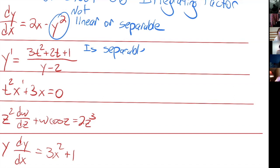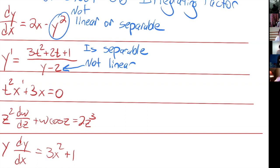For the second one, this one is separable because it's basically already a product, but it is not linear since when we divide by the dependent variable that's not a linear thing. And even if I tried to move the y-minus-two to the other side, I would have a term which is y-prime times y, and that would not be linear. When thinking about these, you want to identify what is the independent variable and what is the dependent variable, because the dependent variable is the thing that needs to be linear.